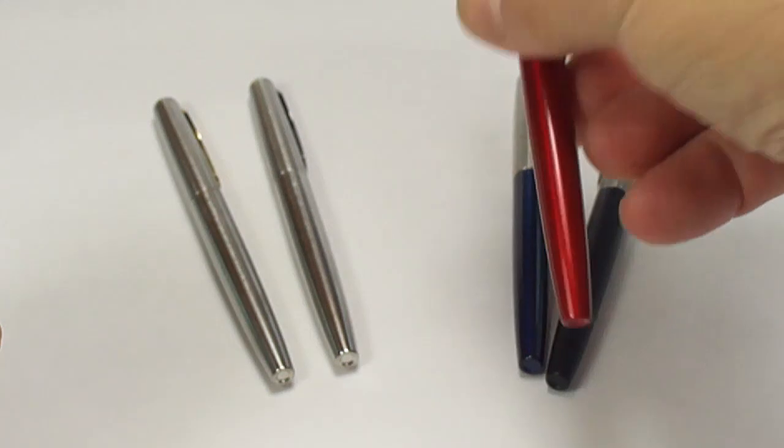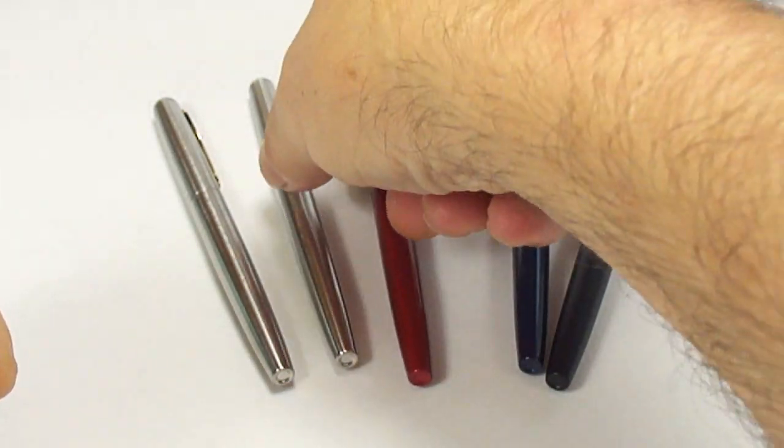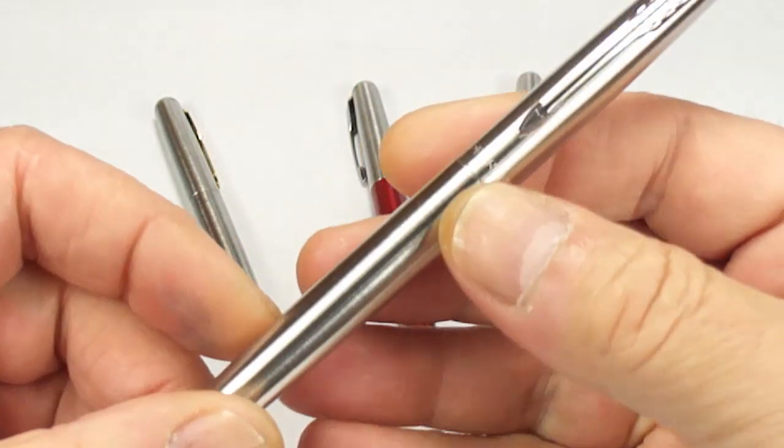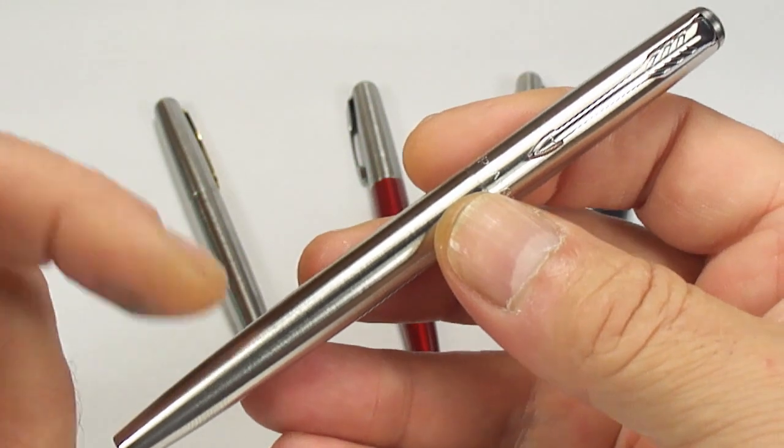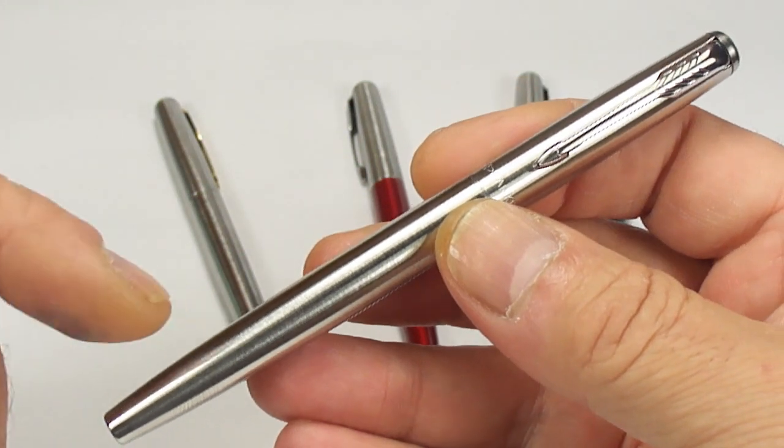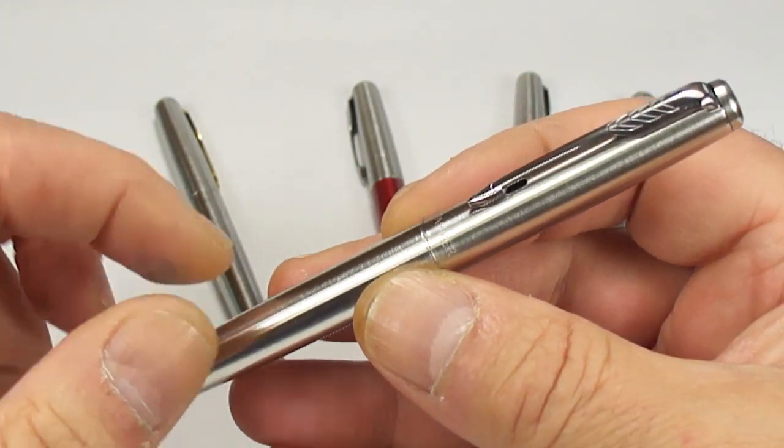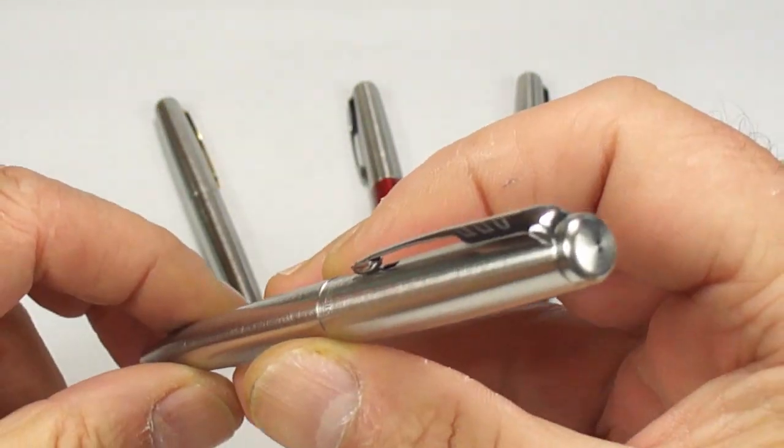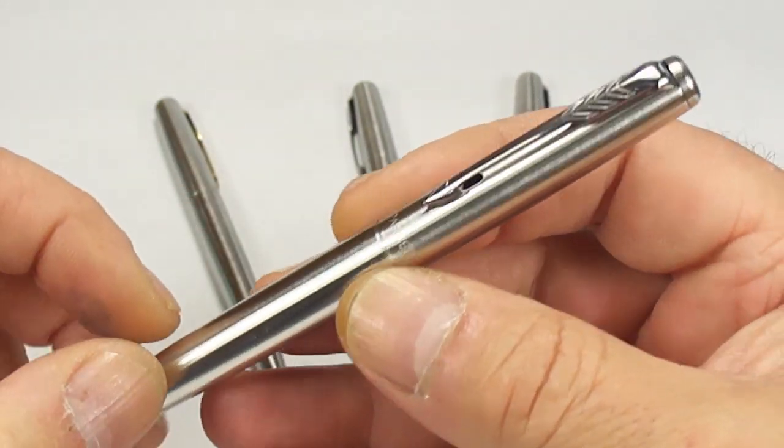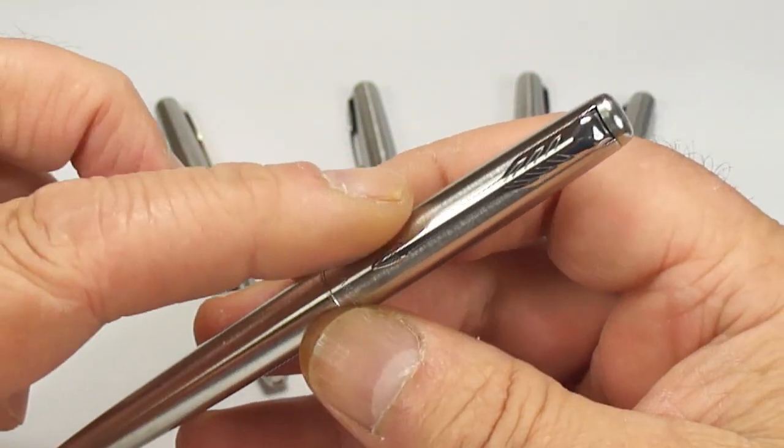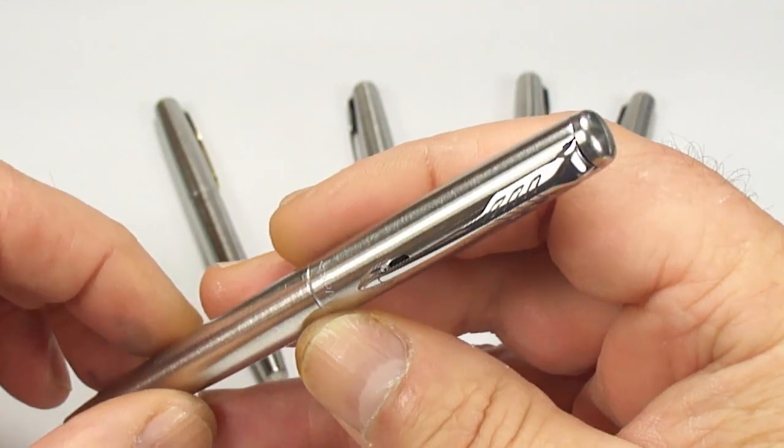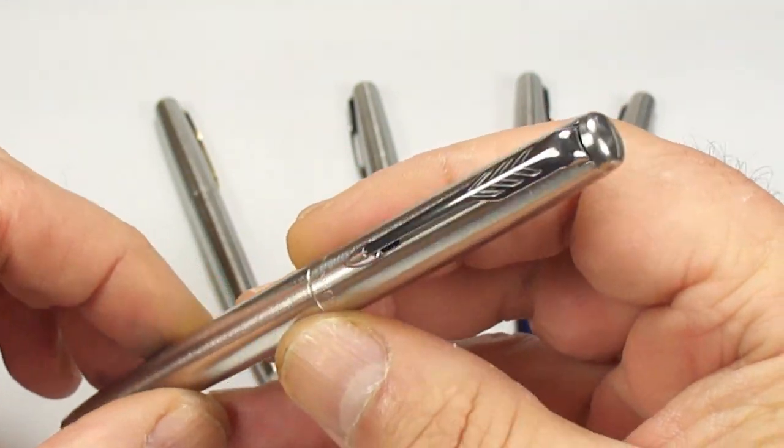The next one within the range we have the stainless steel CT which stands for chrome trim, so it's in stainless steel all the way through with a chrome clip to the very top of the cap as you can see there.